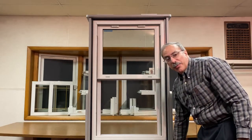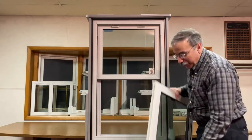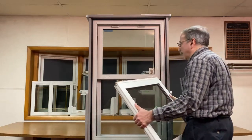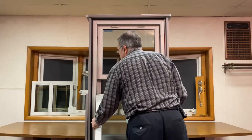To reinstall your bottom sash, you're now going to position the window with the pivot bars located above the position of the balance shoes.